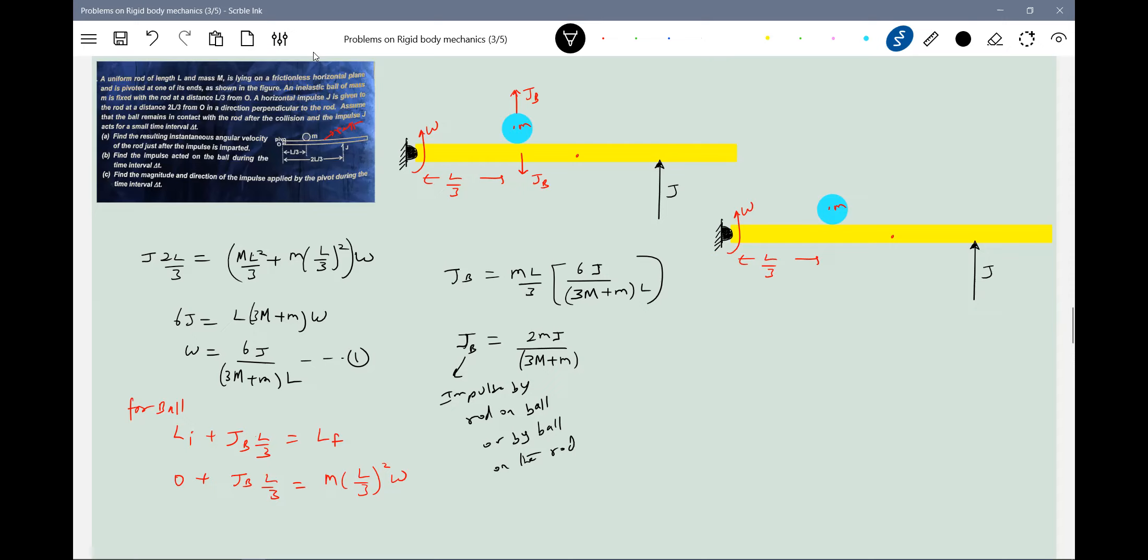So we got the impulse by rod on ball or by ball on the rod. Now find the magnitude and direction of impulse applied by the Pivot during the time interval Delta T. Why should the Pivot come with an impulse? In that interval, the Pivot is also acting. I think we never found out. If you can remember, impulsive reactions...